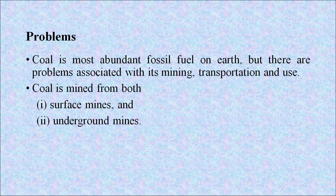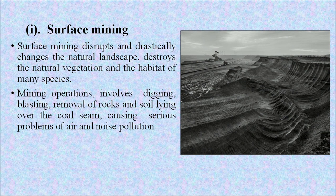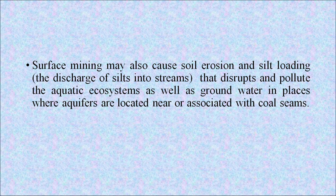Coal is the most abundant fossil fuel on earth, but there are problems associated with its mining, transportation and use. Coal is mined from both surface mines and underground mines. Surface mining disrupts and drastically changes the natural landscape, destroying natural vegetation and the habitat of many species. Mining operations involve digging, blasting, and removal of rocks and soil overlying the coal seam, causing serious problems of air and noise pollution. Surface mining may also cause soil erosion and silt loading that disrupts and pollutes aquatic ecosystems as well as groundwater in places where aquifers are associated with coal seams.